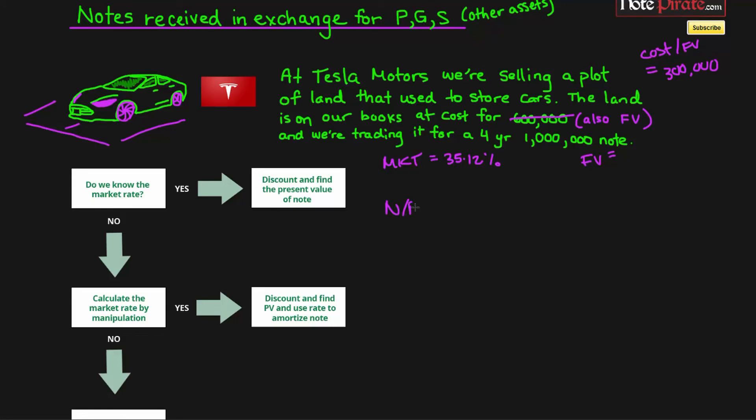Once again, we'll report our note receivable and the land. The land has to be de-recognized at $300,000, and the note receivable will be issued at $300,000, and then the discounts will be amortized. To make it much more clear, you can also use that contra account, discount on note receivable, and then land being credited.